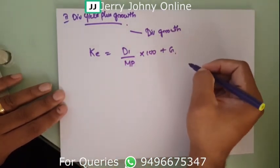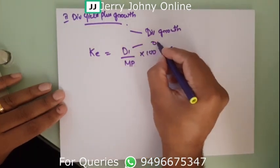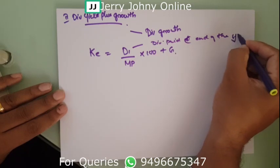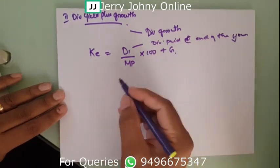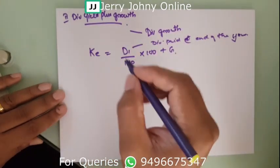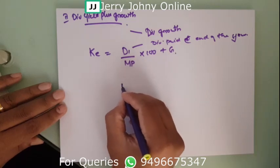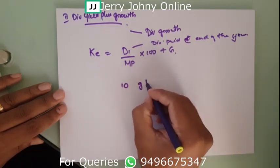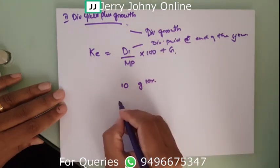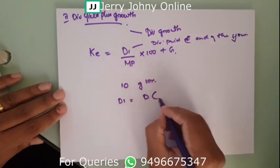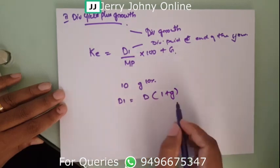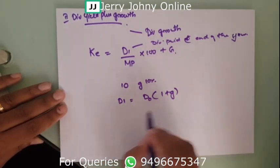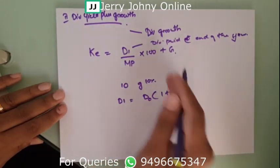D1 is the dividend paid at the end of the year. In some problems, you may be given D0, the previous year's dividend. For example, if the previous year's dividend was ₹10 and the expected growth is 10%, then D1 equals D0 into (1 plus G). So D1 = D0 × (1 + G). That is the formula for finding D1 in the dividend yield plus growth method.